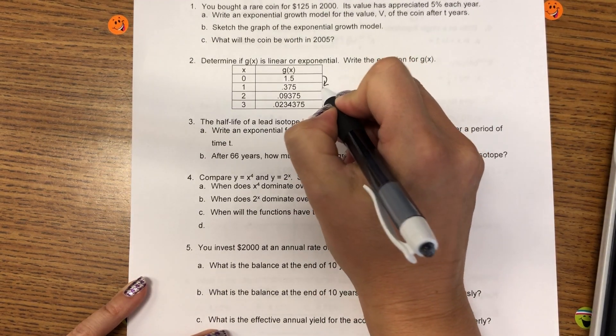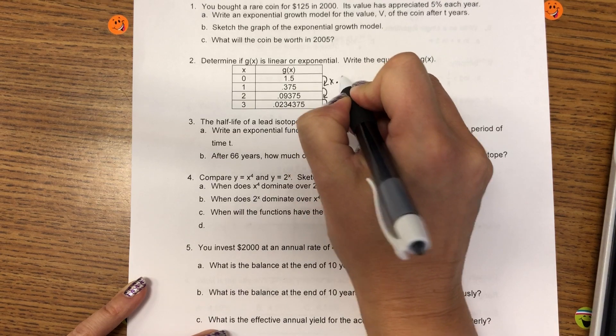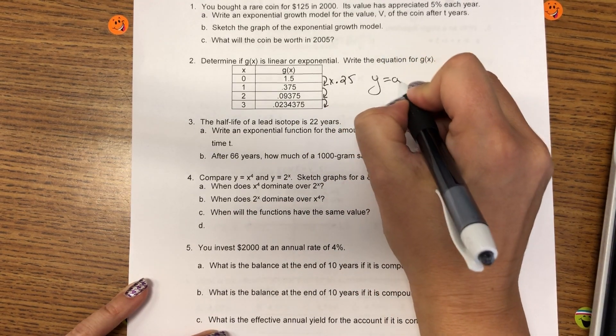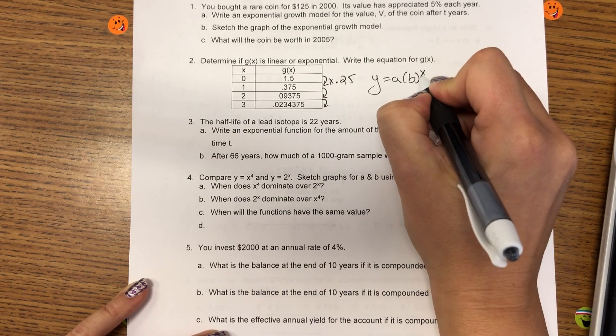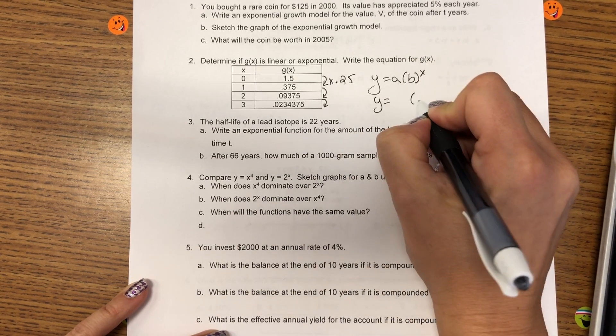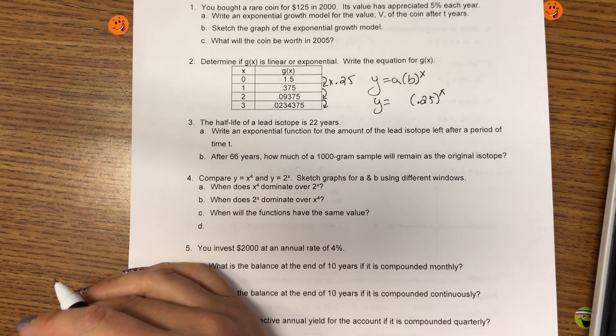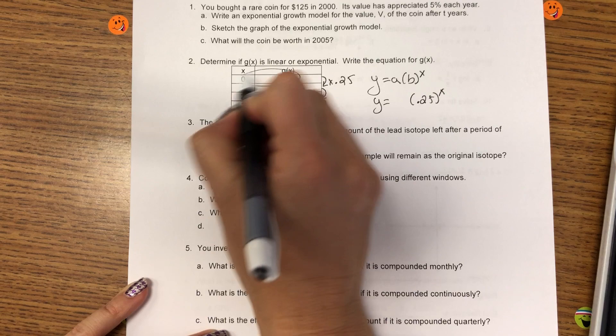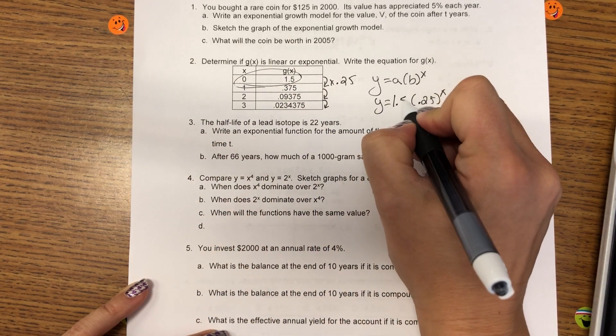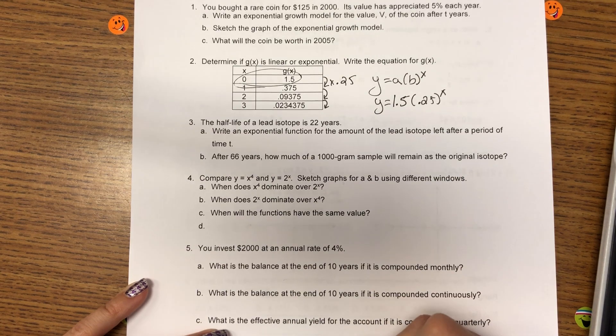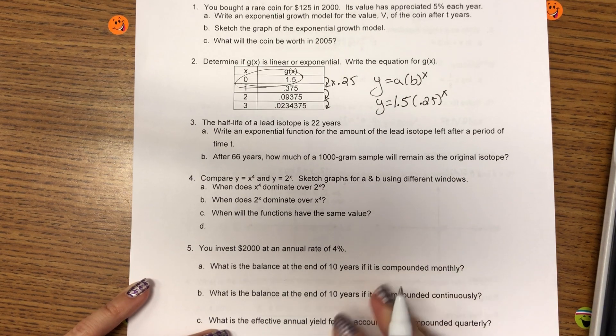If the ratio is constant, it's exponential. And that works. Check all of them just to be sure. Okay, so that is 0.25. So, that means to multiply, to go to each row, you multiply by 0.25.